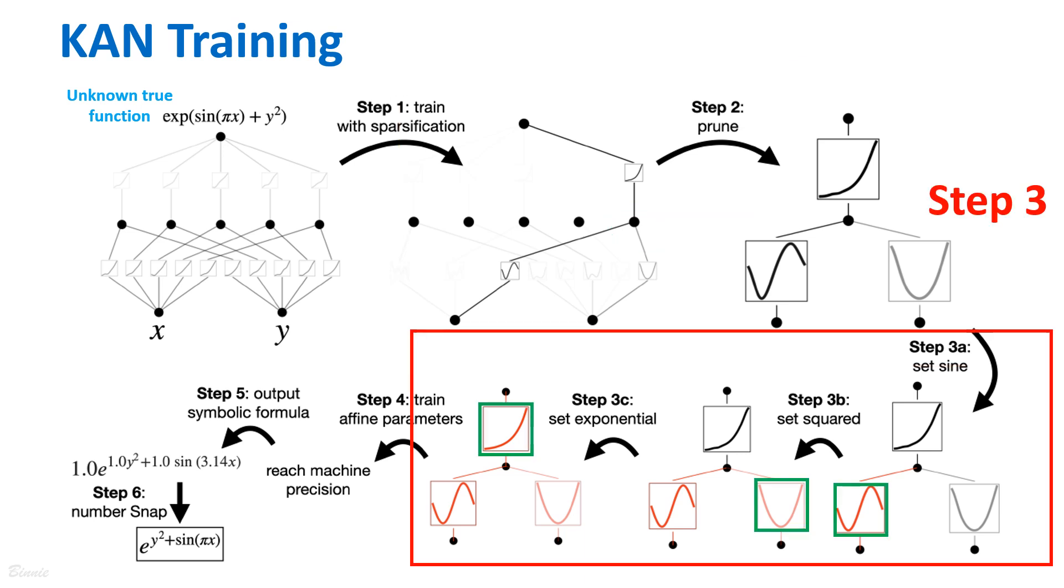Now let's proceed to step three, setting symbolic functions. Assuming the user can correctly guess the symbolic formulas associated with the activation functions by examining the KAN plot, they can manually set these symbolic functions. However, there may be instances where the user lacks domain knowledge or has no idea about the specific symbolic functions. In such cases, a function is provided to suggest symbolic candidates automatically.